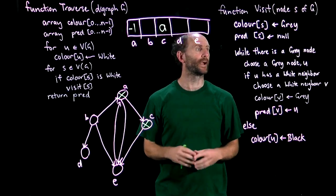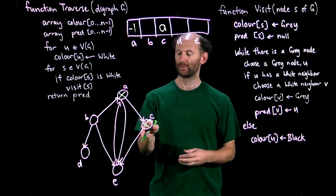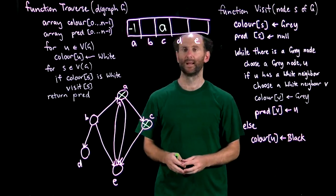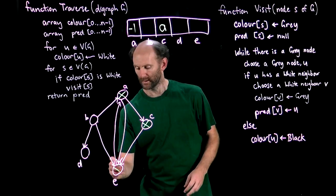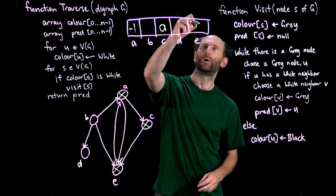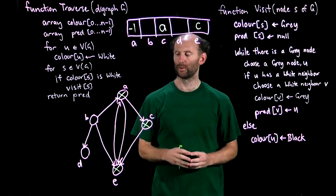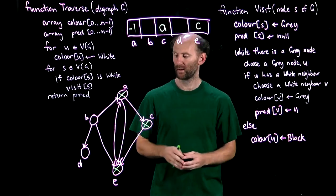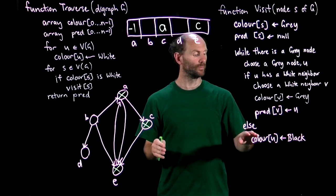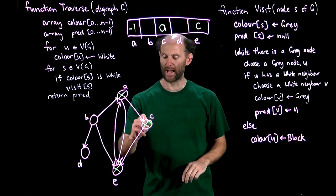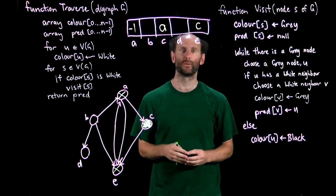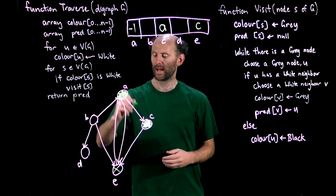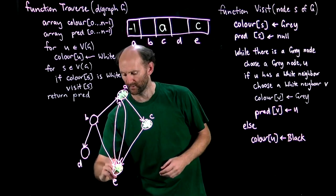Back at the start of the loop, we choose another gray node — let's say c. Does c have a white neighbor? Yes, it has e. We visit e, color it gray, and record the predecessor of e as c. Back at the top of the loop, we choose c again. C has no white neighbors, so we color c black. We go through the loop a couple more times, seeing that neither a nor e has any white out-neighbors, so we color them both black. There are no more gray nodes.